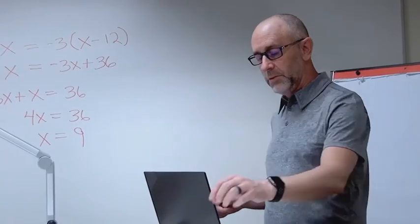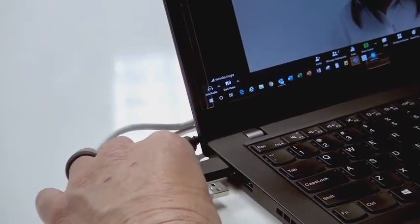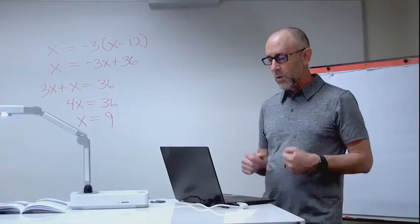First thing I'm going to do is connect the document camera itself. It's just a USB cable. I'm going to connect it to my PC, plug it right into a USB port. Once it connects, I'm ready to go.